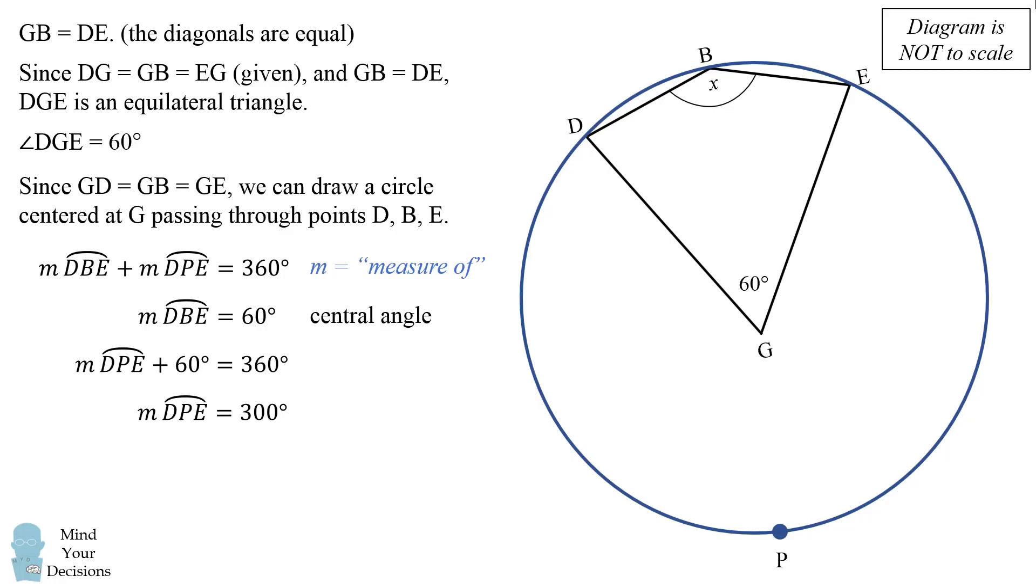So how can we figure out DBE? Well, the measure of angle DBE is equal to half the measure of the arc by the inscribed angle theorem. Thus, the measure of angle DBE is equal to 300 degrees divided by 2, which is 150 degrees and that's equal to X. So we get to the same answer using the property of circles and it's quite a remarkable way.